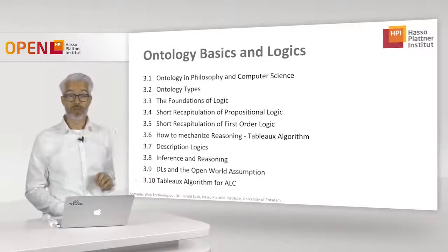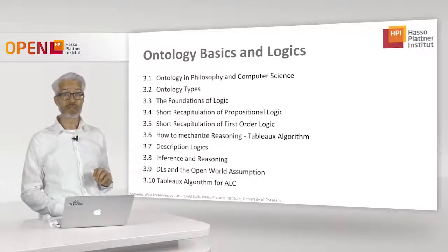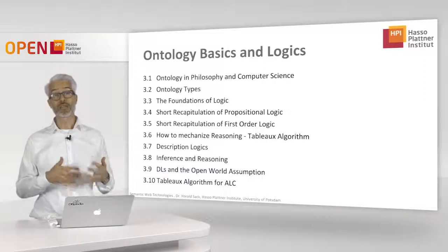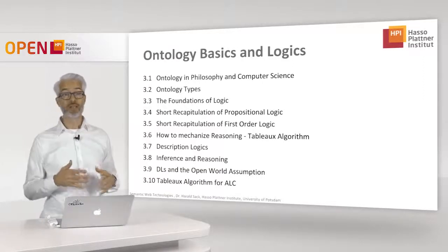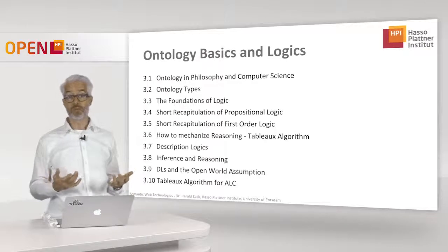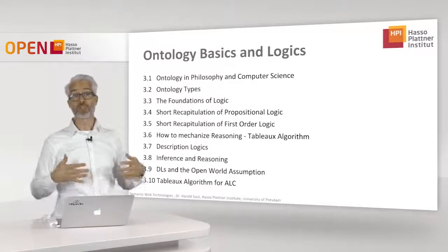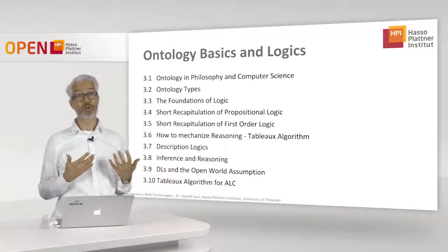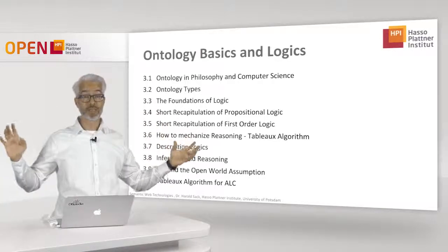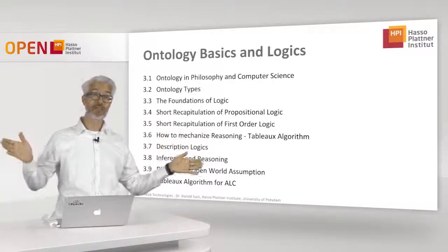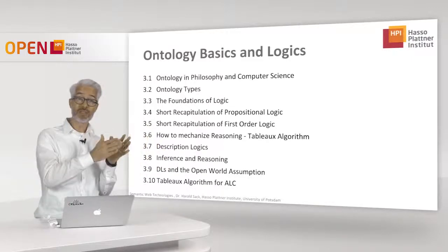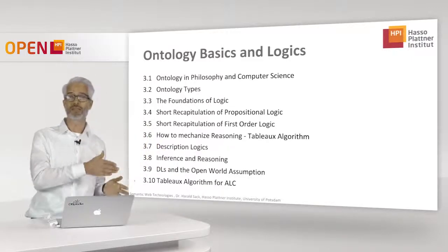We will learn more about ontologies if we consider several types of ontologies. You can distinguish them, for example, according to the domain they are dealing with. There are rather general ontologies — the so-called top-level ontologies — which try to explain the entire world, and there are rather pinpoint-specific ontologies which are only focused on a specific domain or application.